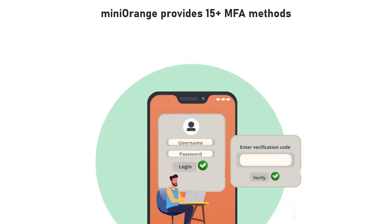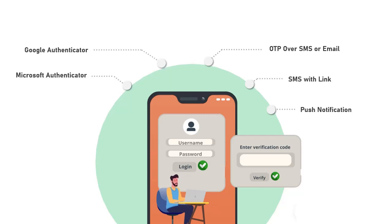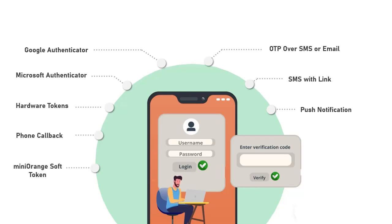Mini Orange provides 15 plus MFA methods like OTP over SMS or email, SMS with link, push notifications, Google Authenticator, Microsoft Authenticator, hardware tokens, phone callback, Mini Orange soft token, and many more.